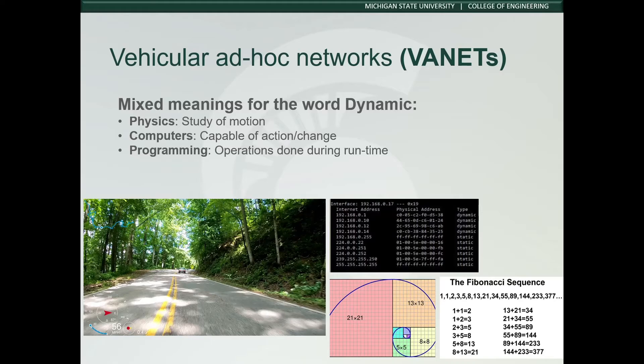Contrarily, VANETs in mobile CPS are dynamic in many ways. The word dynamic has several definitions. In physics, it is essentially the study of an object's motion and its surroundings — an example of this would be a vehicle moving on the highway. In computer terminology, it is usually defined as the means capable of action and or change — an example would be a device's IP address or radio frequency bands.